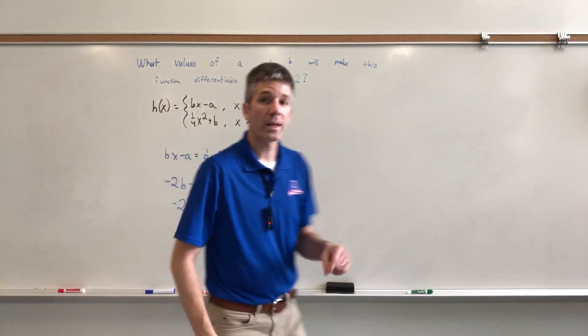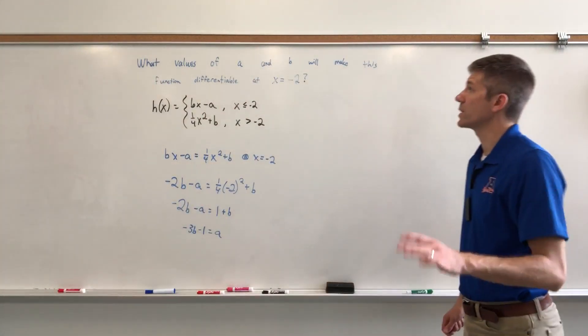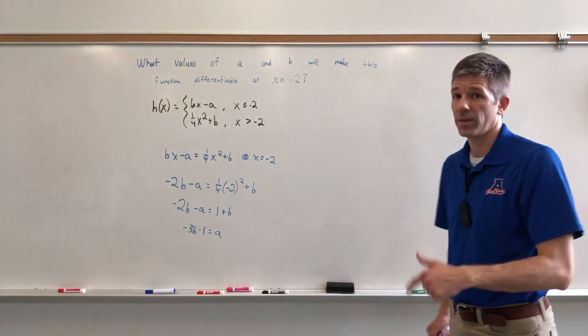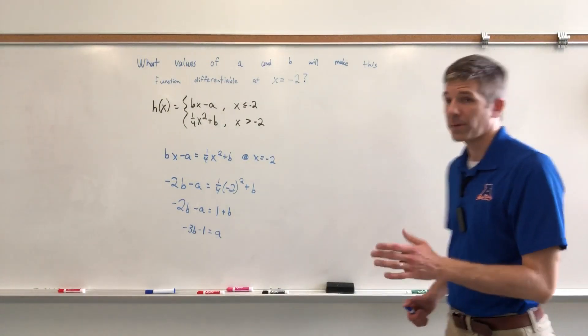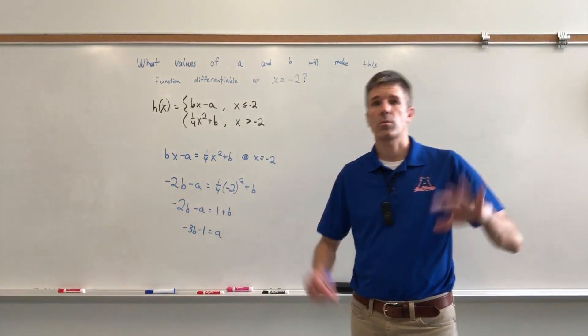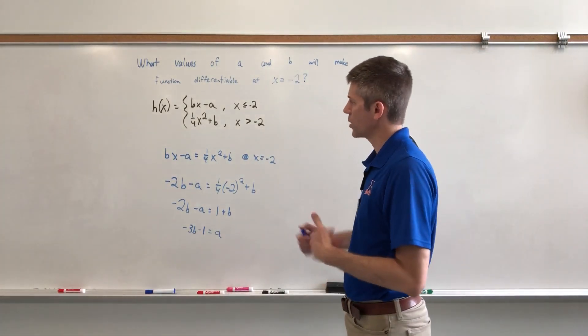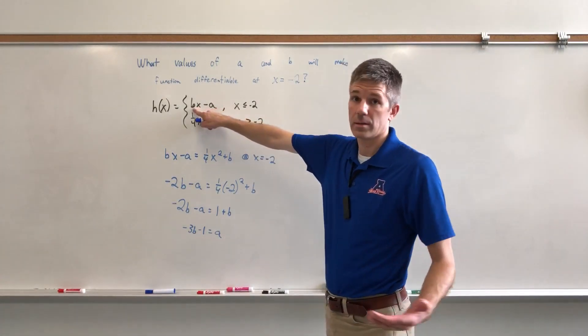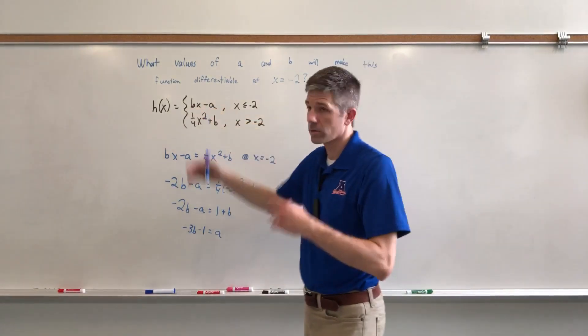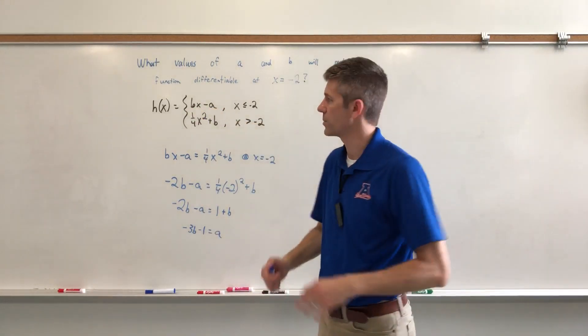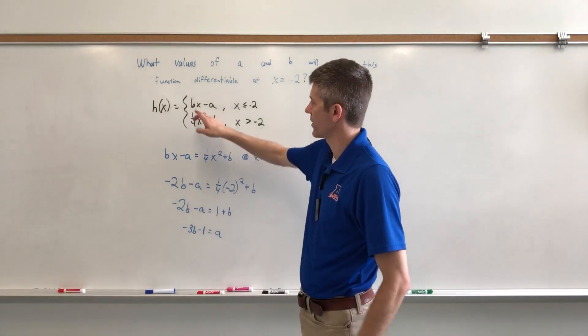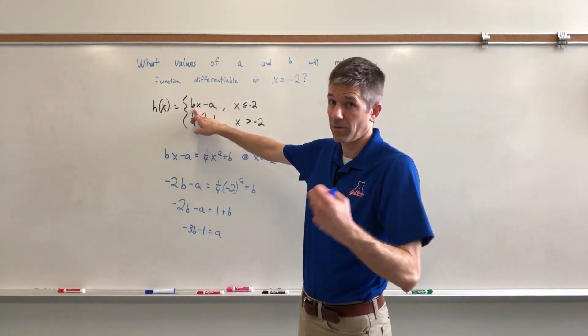Here's the other part. We need to find, again, differentiability. We need to find where the slopes are the same. Again, I'm not treating this like it would be a free response question where I'd show all my work. But I am going to show just a little bit. The slope from the left is going to be B. So Y equals MX plus B, not the same B, but the slope is the number in front of X, the coefficient. So it is the variable B. The Y-intercept in this case is negative A.